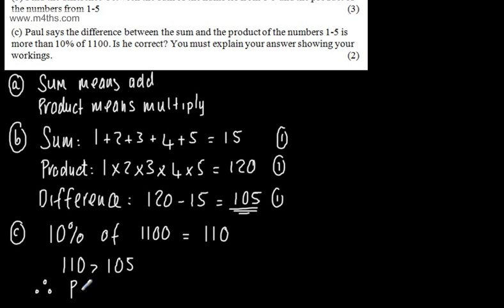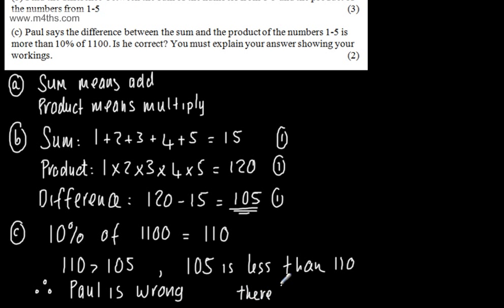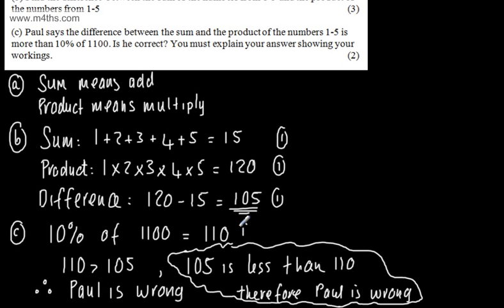So therefore, Paul is wrong. We've got the difference between them is 105. 10% of 1100 is 110. 110 is greater than 105. Or you could say that it's less than. You can say 105 is less than 110. Therefore, Paul is wrong. So all we've done is just structured this nice and clearly. So we would get one mark for working out the 10%, and we get one mark for answering the question.